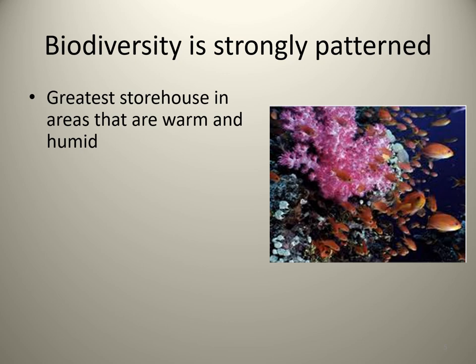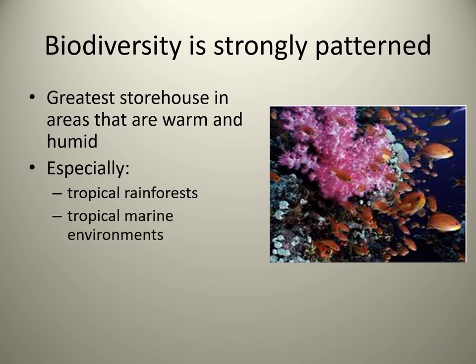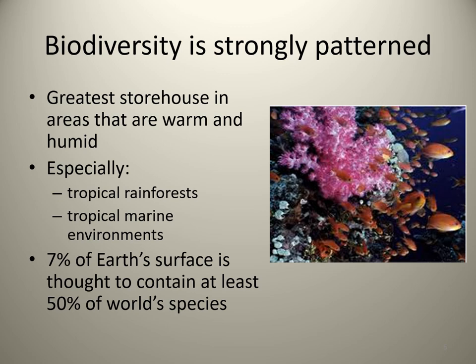Biodiversity is strongly patterned where it occurs. The greatest storehouses of biodiversity tend to be warm and humid — especially tropical rainforests like the Amazon and tropical marine environments like Hawaii or Solomon Islands coral reef systems. Just 7% — less than a tenth — of the Earth's surface is thought to contain at least half of the world's species.